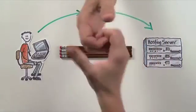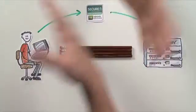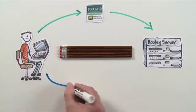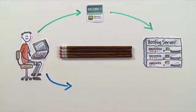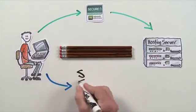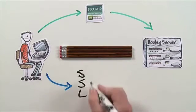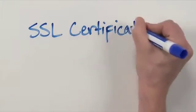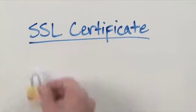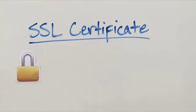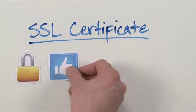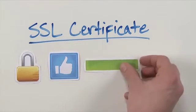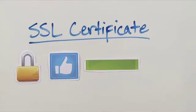During the handshake, the computers decide what kind of encryption, or scrambling, they'll use. This agreement is used to establish a secure connection between the two computers called an SSL, or Secure Socket Layer. Depending on the certificate that Benzels purchased, Todd's browser may display a small icon shaped like a lock, a thumbs up, a green browser bar, or some other reassuring symbol when security is in place.